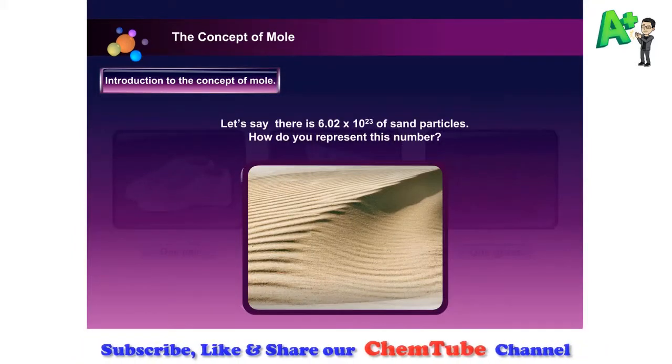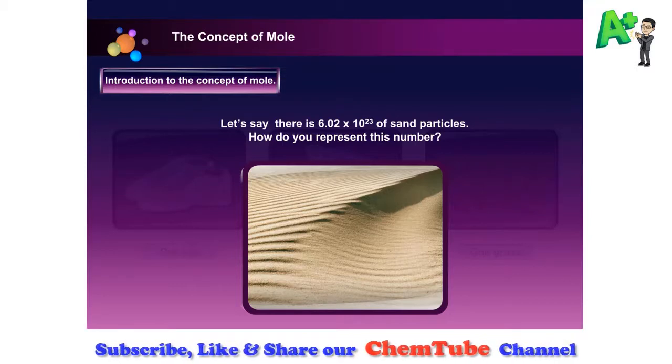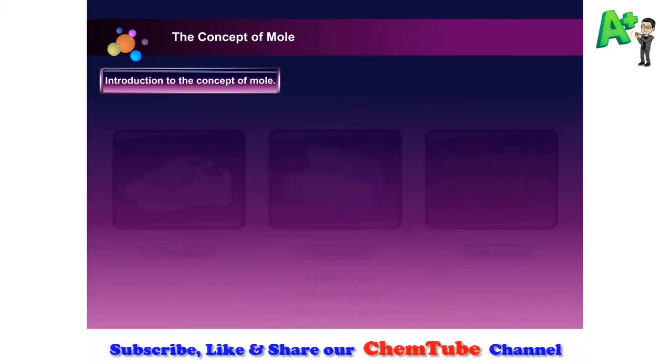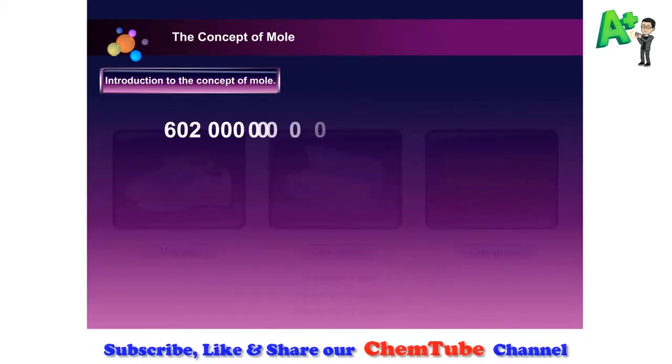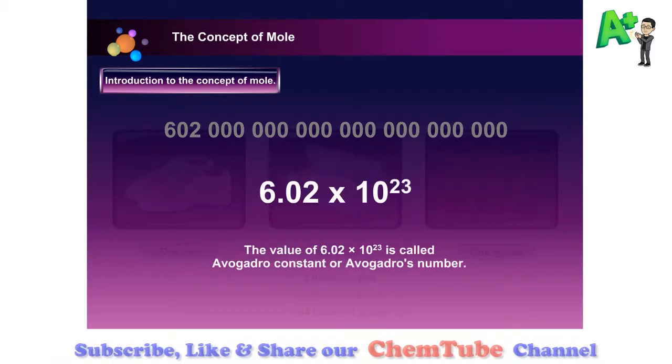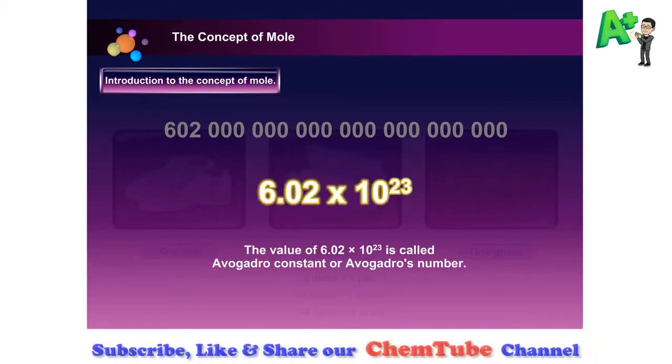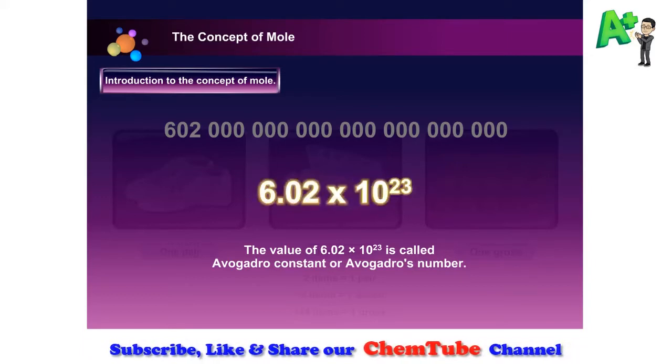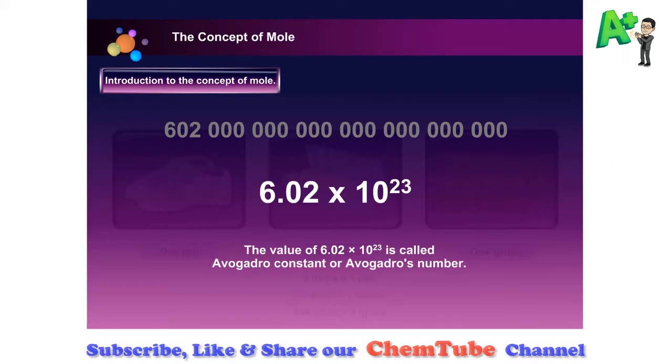Let's say there is 6.02 times 10 to the power of 23 of sand particles. How do you represent this number? The value of 6.02 times 10 to the power of 23 is called the Avogadro constant or Avogadro's number.